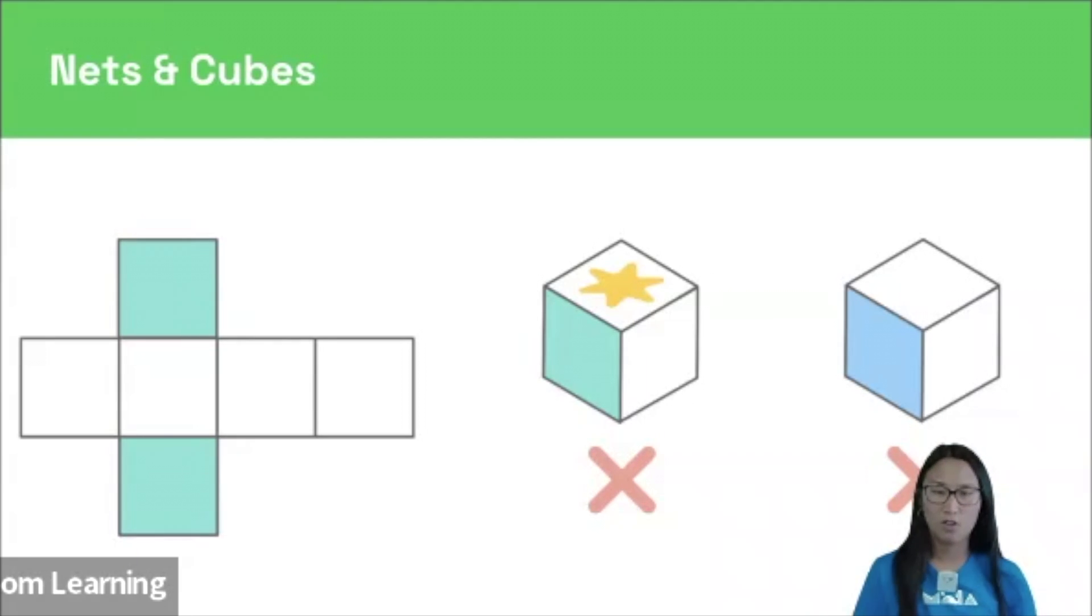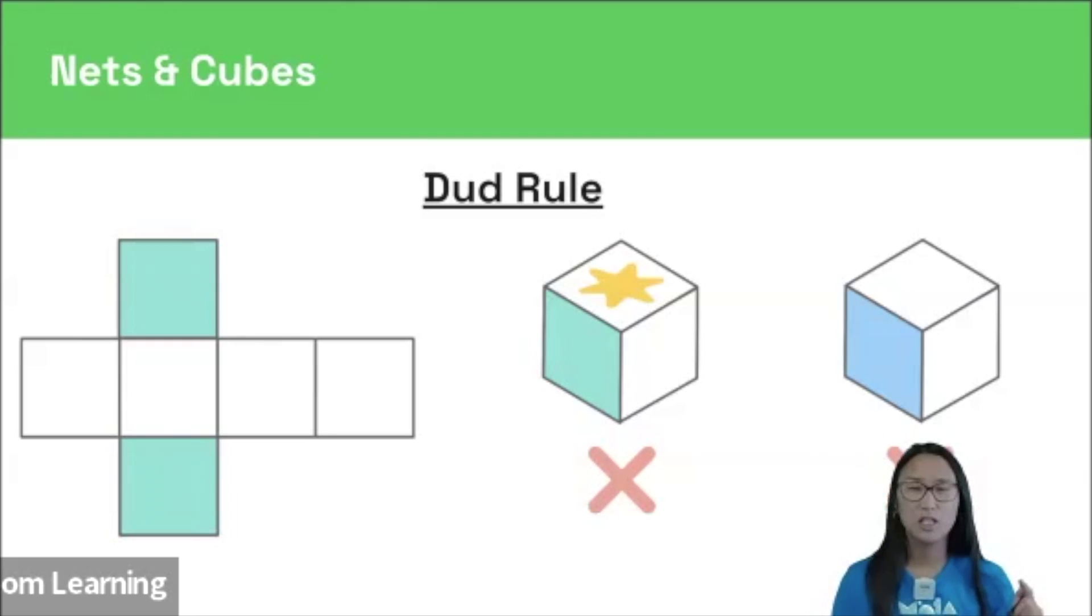Let's start off with this one, the dud rule. So a dud cube is one that shows shapes or colors that are not present on the net.